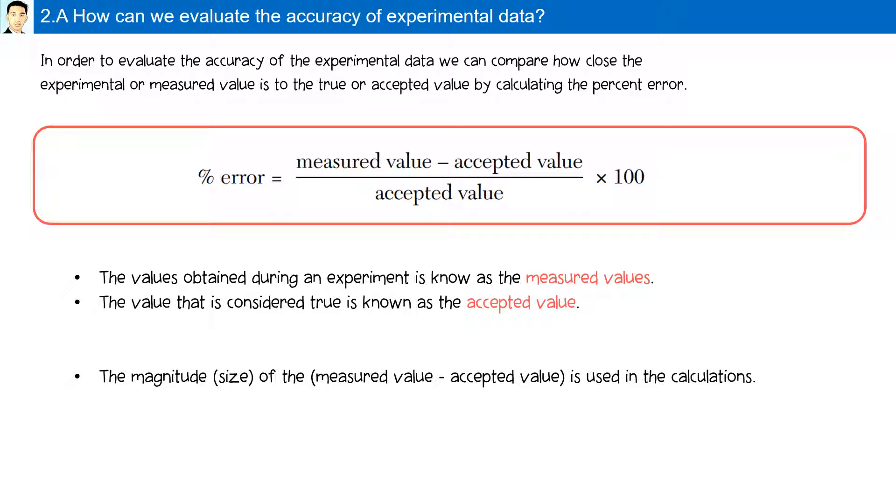The size or the magnitude of the measured minus the accepted value is used in the calculations. A negative number indicates that the measured value is below the accepted value.